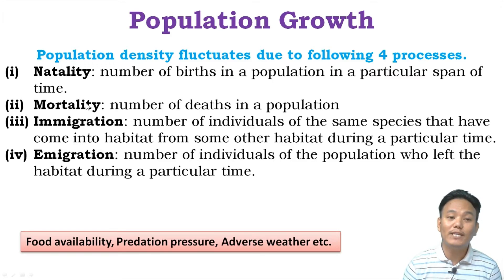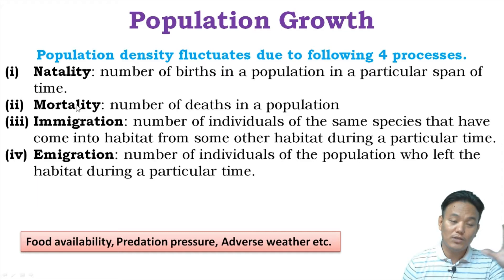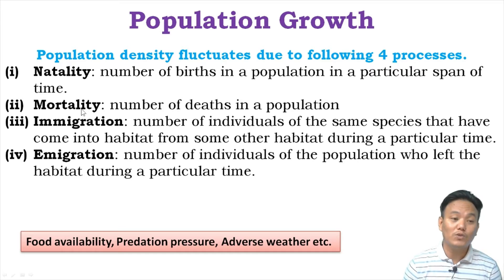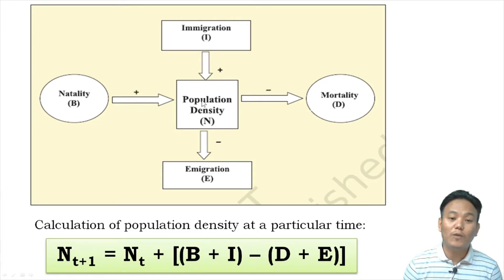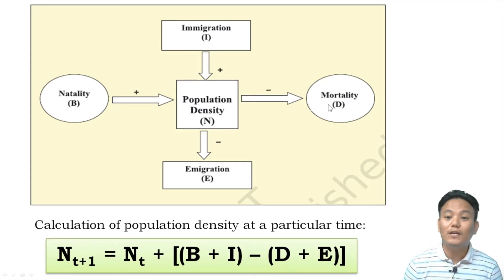In general, natality and mortality — birth rate and death rate — play an important role in changes in population density within an area. In your textbook, a diagram shows the four processes and how they affect population density. Immigration and natality add to the population density, so they are shown with plus signs pointing toward the population. Mortality and emigration reduce population density, so arrows point away from the population with negative signs.